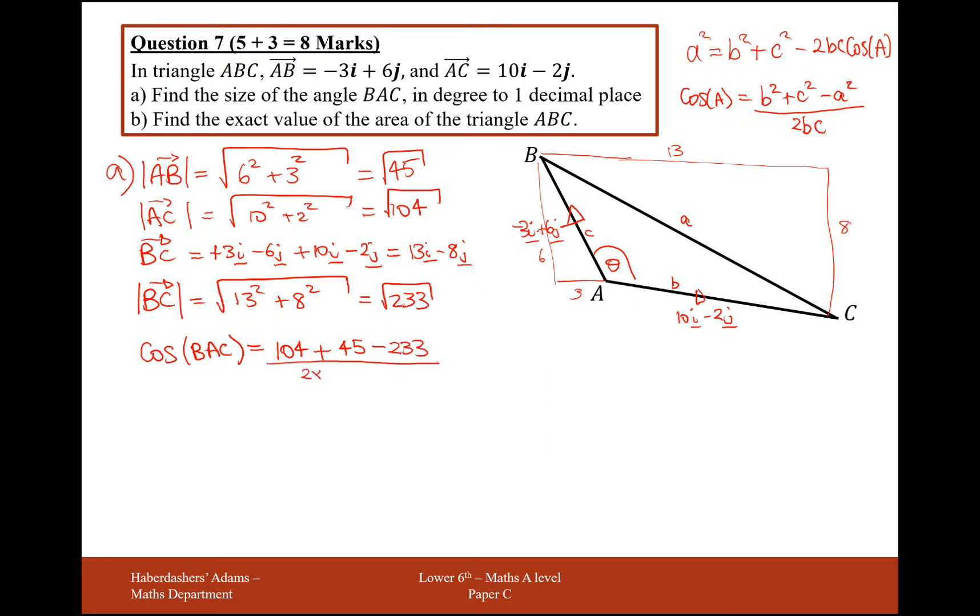And divide by 2 times B, which was AC, which is square root of 104, times C, which is the square root of 45. This will simplify to minus 7 over square root of 130, so cos inverse of minus 7 over square root of 130 is going to equal 127.9 degrees.